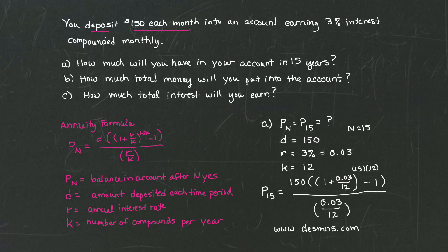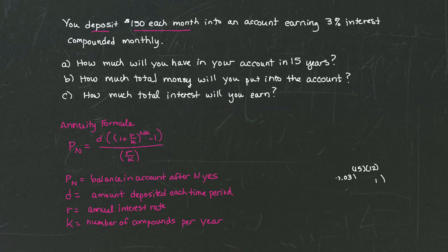Shall we go back and work the second part to this problem? The second part asks, how much total money will you put into the account? For part B, I'm being asked how much money I'm going to put into my account. Since I'm making investments of $150, I know that each month I'm going to be investing $150. I also know that per year I'm going to invest $150 times 12 because I'm going to make 12 payments of $150. Well, I'm going to be doing that over 15 years. And so that means I'm going to take and multiply this by 15.